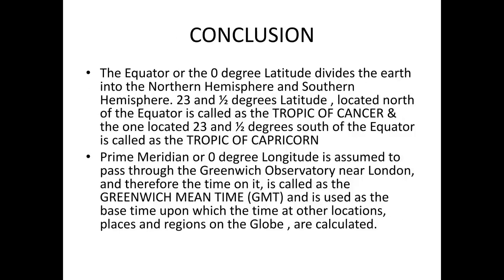Finally, we can conclude by stating that the equator, or the zero degree latitude, divides the Earth into the northern hemisphere and the southern hemisphere. The equator runs through the center of the Earth from east to west. Another latitude located 23 and a half degrees north of the equator is called the Tropic of Cancer, and the one located 23 and a half degrees south is called the Tropic of Capricorn. The region between those latitudinal areas is called the tropical area.